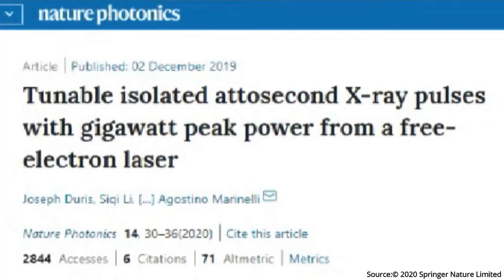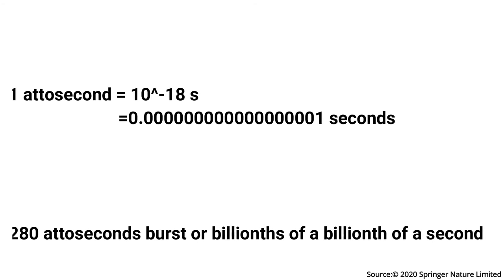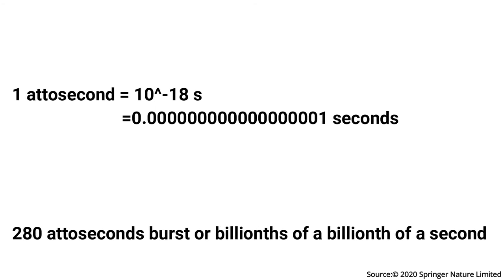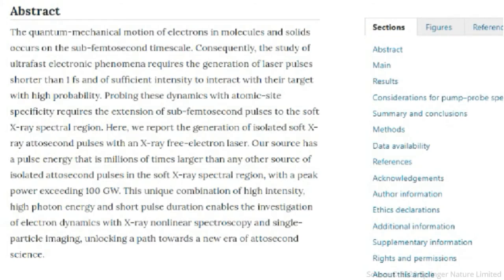Electron, atom, electron motion, speed, time — record. That is at a second — zero. One accurate measurement: billions of billions of billions of seconds.